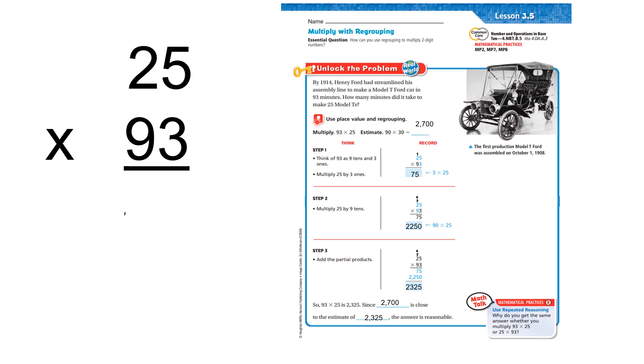We're going to use place value and regrouping. We're going to multiply 93 times 25, and we're going to do it over here. First, we're going to estimate 90 times 30, because 93 would be the 90, 25 would be the 30, and our estimate is going to be 2,700.